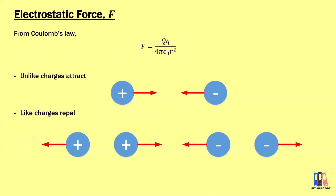The first topic is about the electrostatic force, which we learned about Coulomb's Law that defines the force. The formula is F = qq over 4πε₀r². To determine the direction of the force depends on the type of charges: unlike charges attract, and like charges repel.